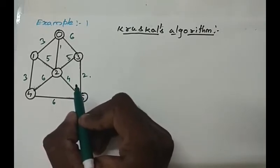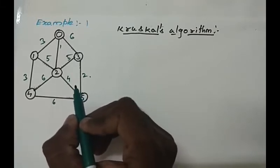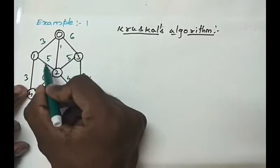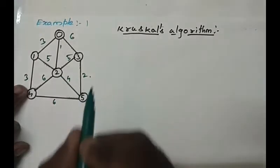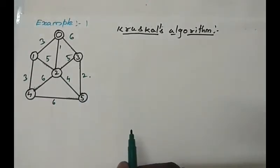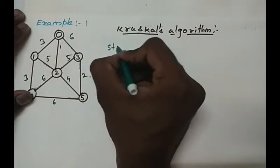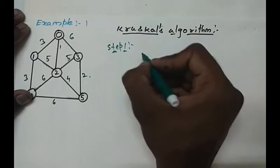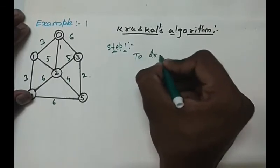It finds the subset of all edges and forms a tree. So this finds the subset of all the edges and forms a tree. Step 1 will be to draw the skeleton of the tree.